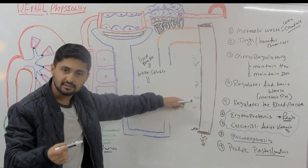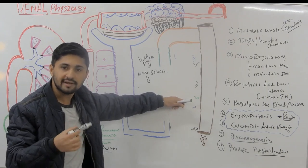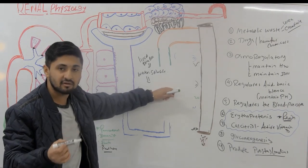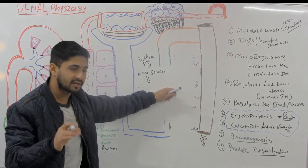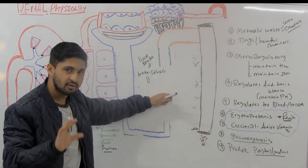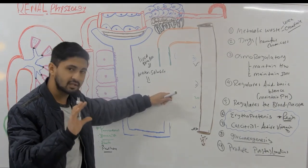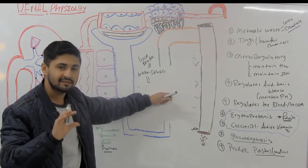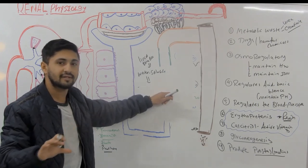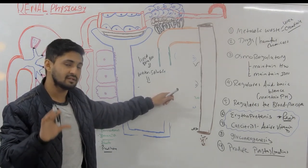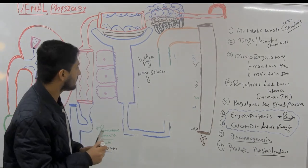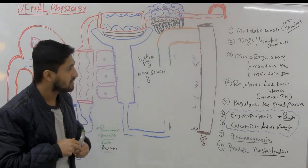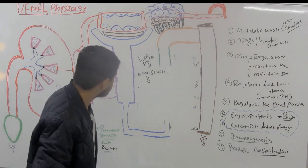There is a reaction called conjugation reactions where they have to add a glucuronic acid or a polar charge. There's also phase one and phase two reactions. Basically, all drugs that are highly liposoluble have to be made water-soluble in order to be excreted from the kidney — that's biotransformation.